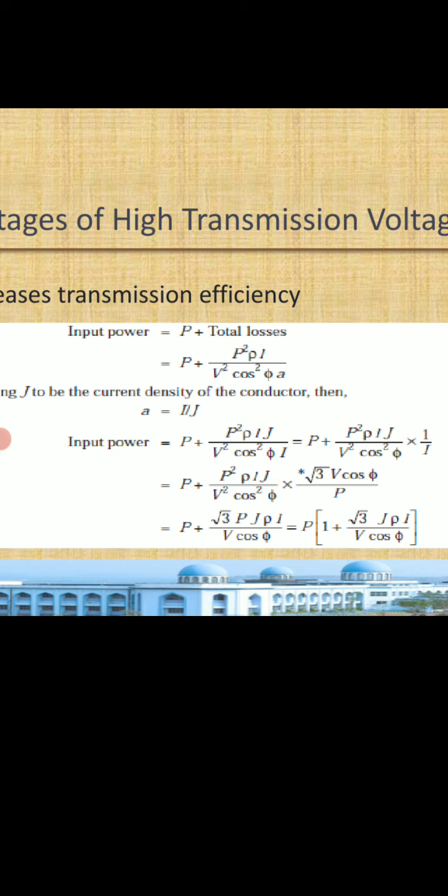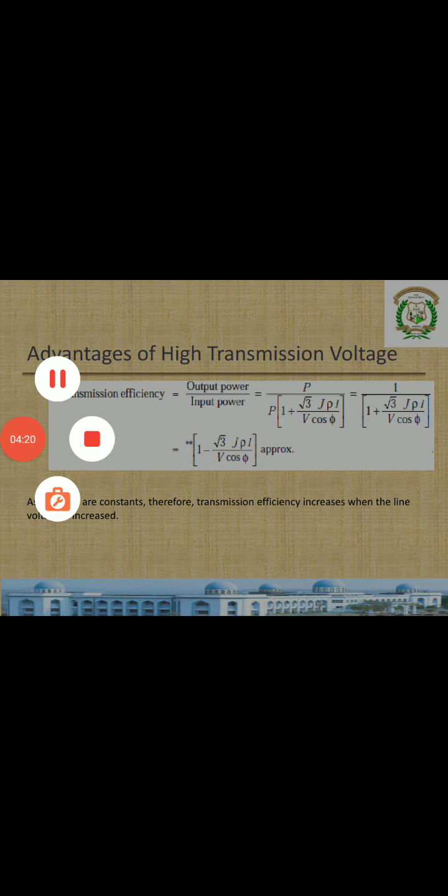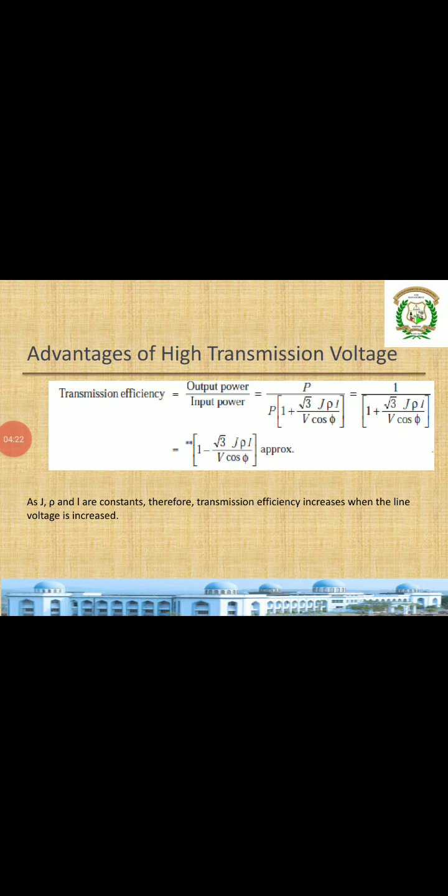In place of I we substitute P divided by root 3 V cos phi. Since I is in the denominator, root 3 V cos phi comes to the numerator and P goes to the denominator. After simplifying, the total input power is P times the quantity one plus root 3 J rho L divided by V cos phi. Transmission efficiency is output power divided by input power; P over P cancels, leaving 1 divided by the quantity 1 plus root 3 J rho L divided by V cos phi, which approximately equals 1 minus root 3 J rho L divided by V cos phi.